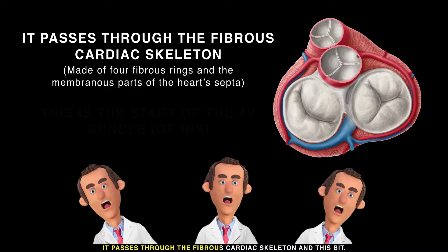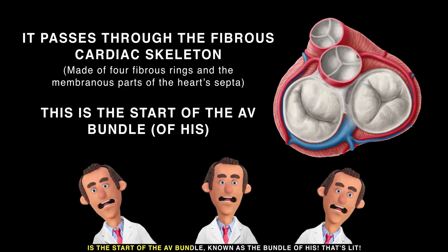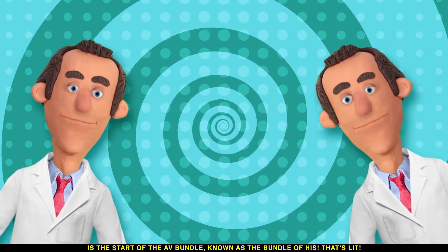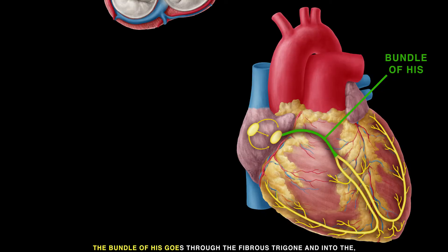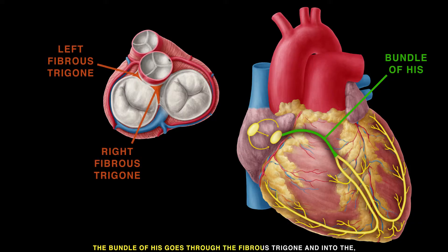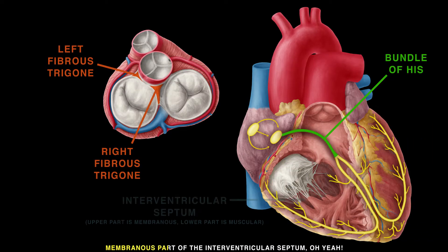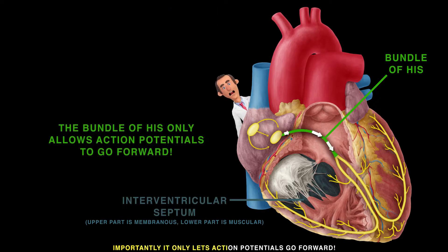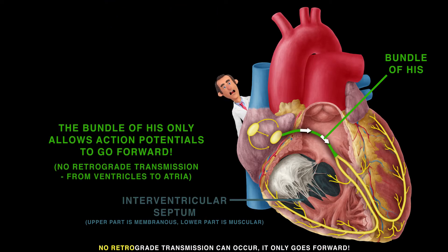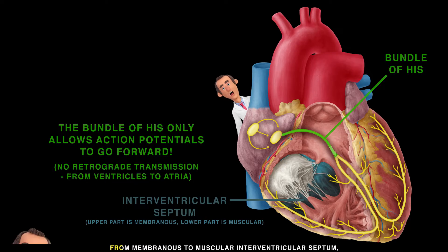The signal passes through the fibrous cardiac skeleton, and this is the start of the AV bundle, known as the Bundle of His. The Bundle of His goes through the fibrous trigone and into the membranous part of the interventricular septum. Importantly, it only allows action potentials to travel forward — no retrograde transmission can occur.